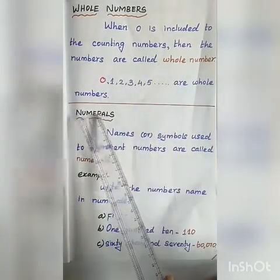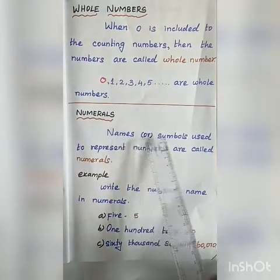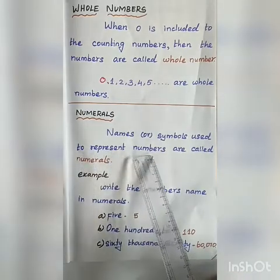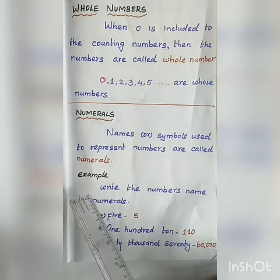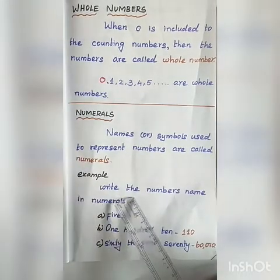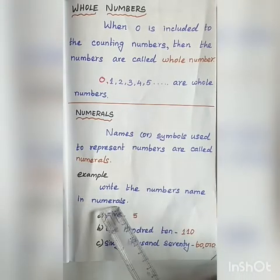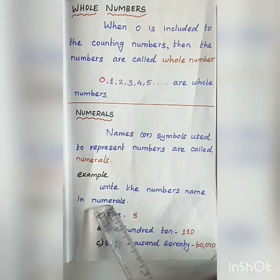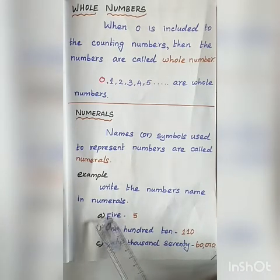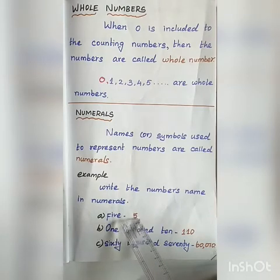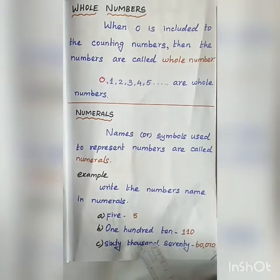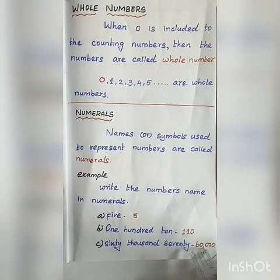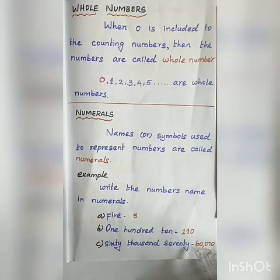Next: numerals. Numerals are the names or symbols used to represent numbers. For example, write the number names in numerals. You have 5, so you write 5. You have 110, so you write 110. You have 60,070, so you write 60,070. So 5, 110, and 60,070 are numerals.